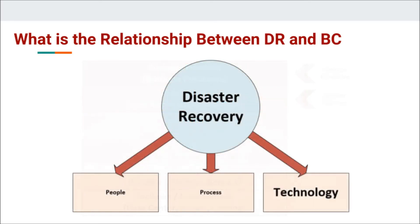Earlier we talked about people, process, and technology. These three components basically comprise every business function you can think of in the business world. You'll have technology supporting it, but it's people and processes that use that technology to make business happen.